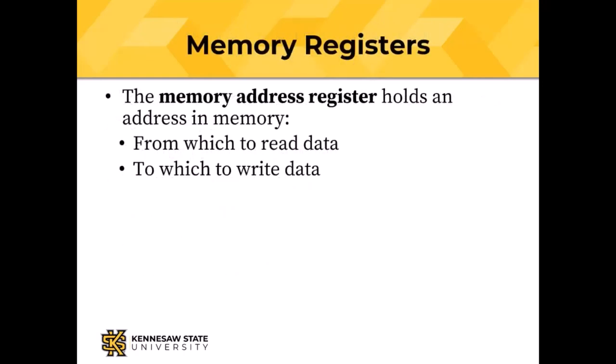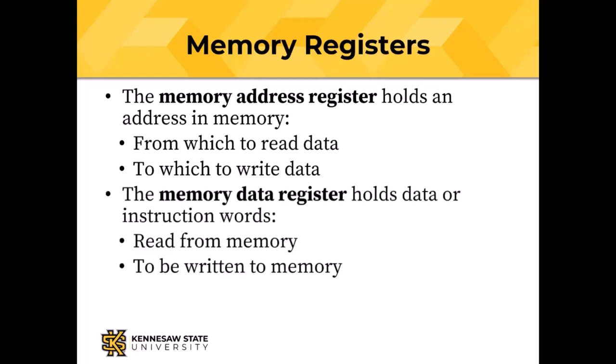The memory address register holds an address of a memory location. For a 4096-byte memory you'd need 12 bits of memory address register. The MAR serves two purposes: it holds the address from which to read when reading from memory, and the address to which to write when writing to memory. The memory data register holds information transferred either from or to memory.